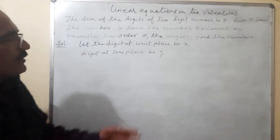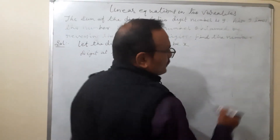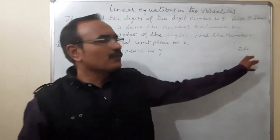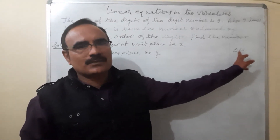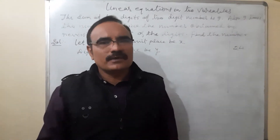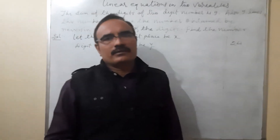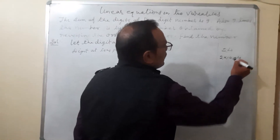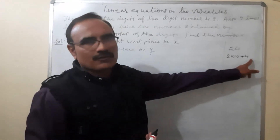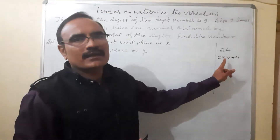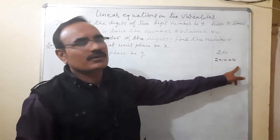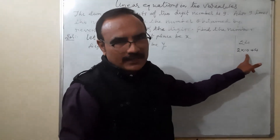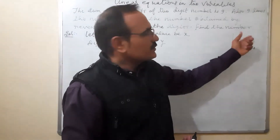To explain how the number is formed, let me give an example. Suppose we have 24. In 24, the digit 4 is at the unit place and 2 is at the tens place. To write 24, we write 2 multiplied by 10 plus 4. So the structure is: unit place digit plus tens place digit multiplied by 10, giving 20 plus 4 equals 24. That is how a number is formed from its digits.